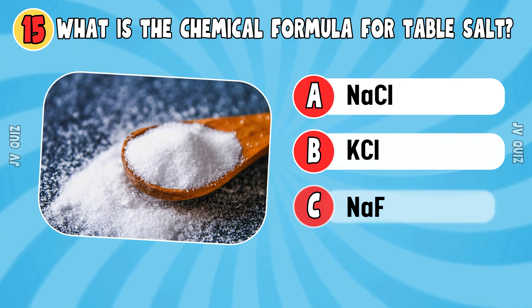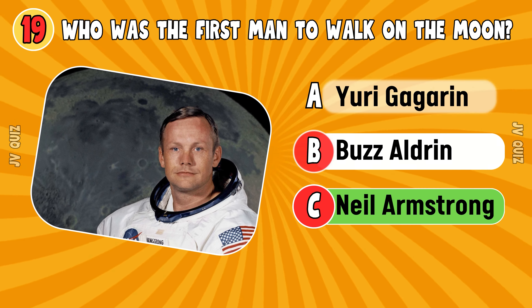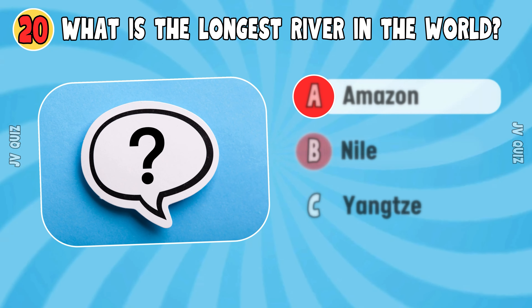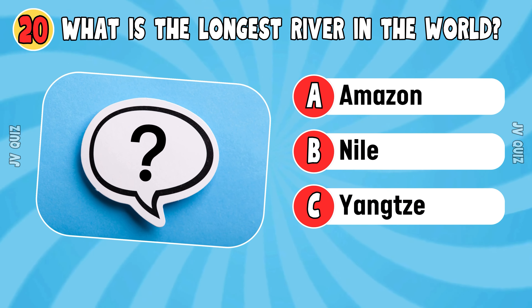Pacific Ocean. Who was the first man to walk on the moon? Neil Armstrong. What is the longest river in the world? Nile.